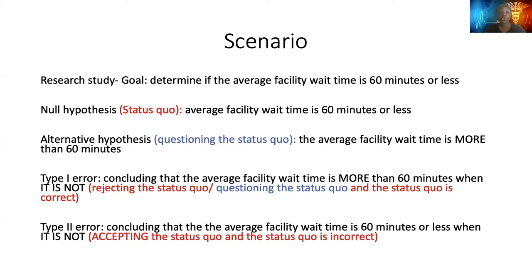A type two error would be concluding that the average wait time is 60 minutes or less — choosing to believe the status quo — and after doing the hypothesis test, it shows that it actually is not correct. So you're accepting the status quo, and after testing, the majority belief turns out to be incorrect. That is a type two error.